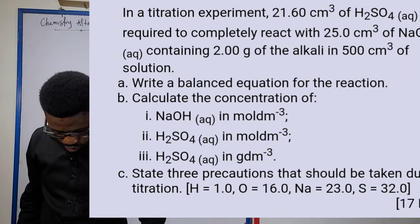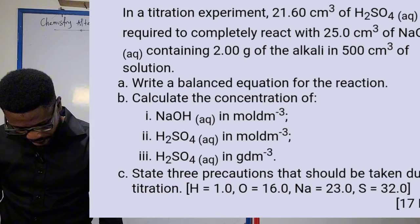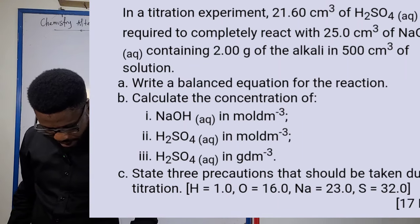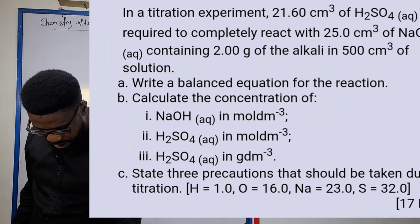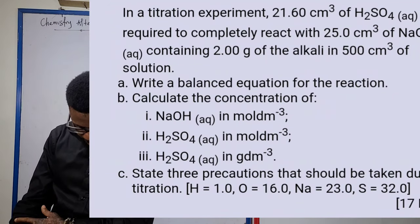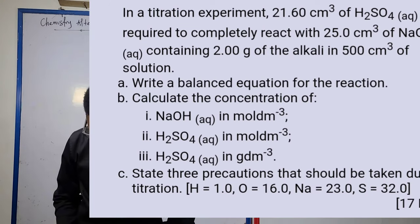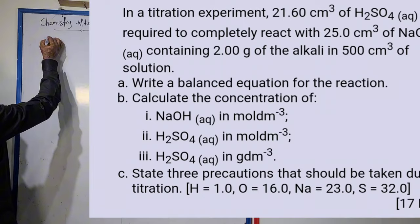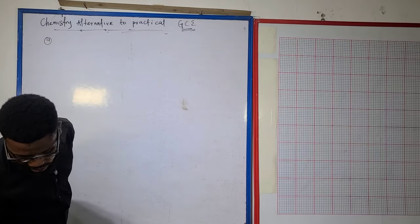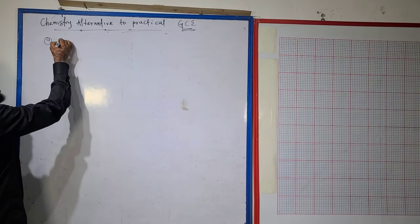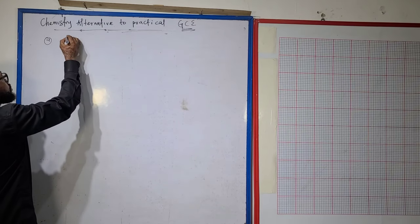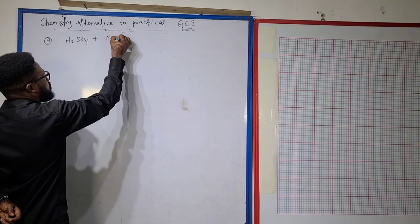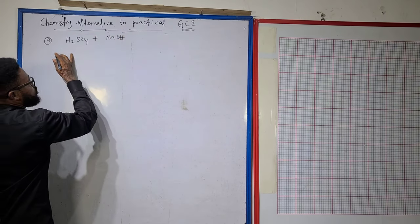The solution contains 2 grams of the alkali in 500 cm³ of solution. Looking at the screen, we were not given any equation, so the first thing we're told to do is write a balanced equation for question a between sulfuric acid and sodium hydroxide.